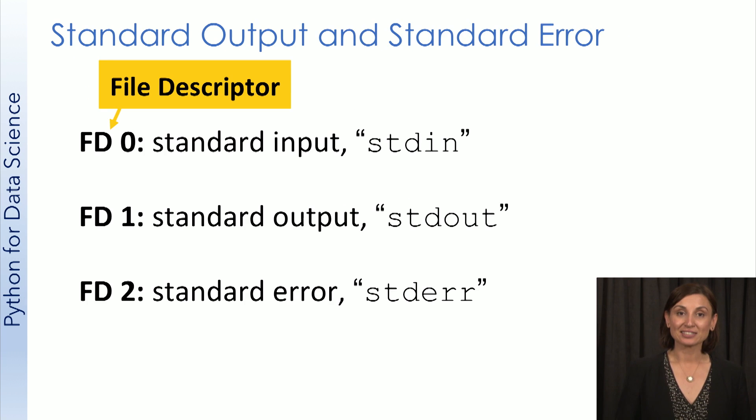On Unix and Unix-like operating systems, each process started from the command line has three file descriptors associated with it. Standard input is normally connected to the keyboard. Standard output and standard error are normally connected to the terminal screen from which the application was launched.